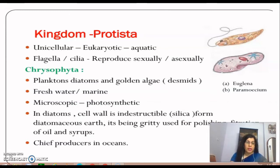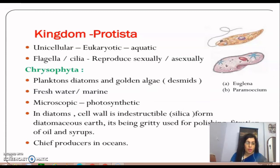Chrysophytes include organisms such as planktons, diatoms, and golden algae — all are part of this group. They are found in fresh water as well as marine water. They are microscopic and float passively in water currents, and that is why we call them planktons.